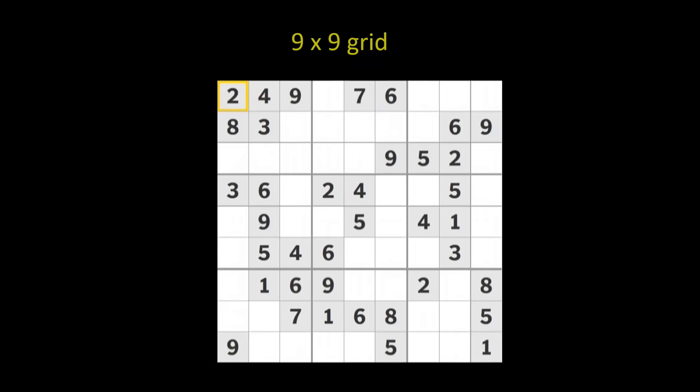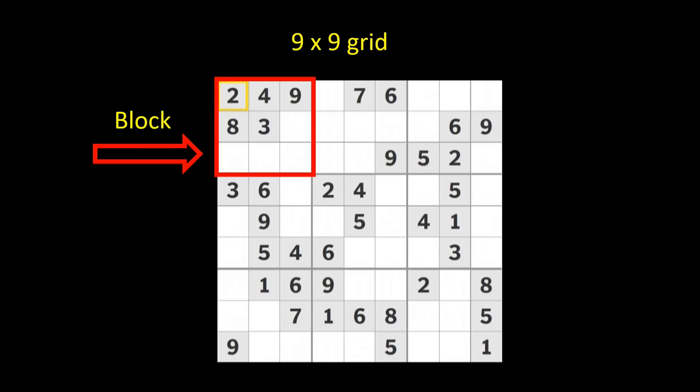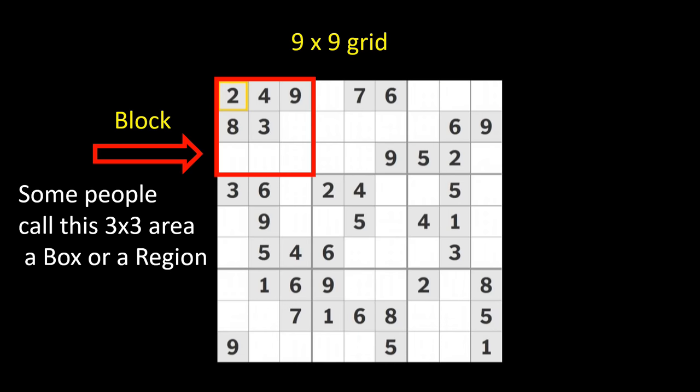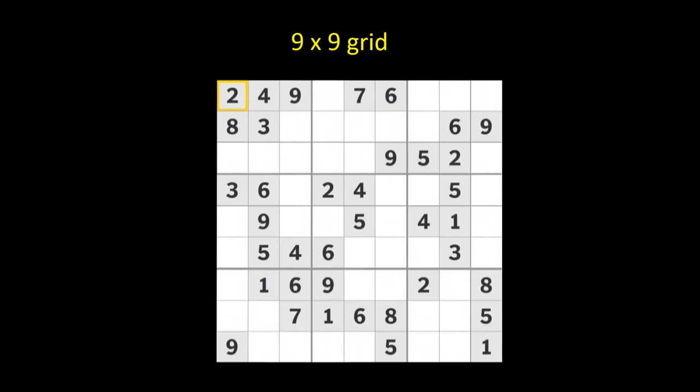Each nine by nine grid is broken down into smaller groups of cells that are three by three. That is, three rows and three columns each. You can see this area with a red box around it. It is a three by three area consisting of three rows and three columns making up nine cells. An area like this is called a block. Some people also call it a box or a region, but it is more often referred to as a block in Sudoku books. Now let's take a look at the entire nine by nine grid, and you can see that the nine by nine grid is made up of nine of these three by three blocks.